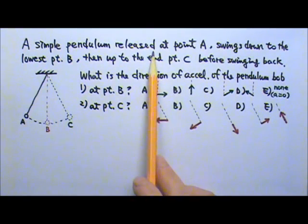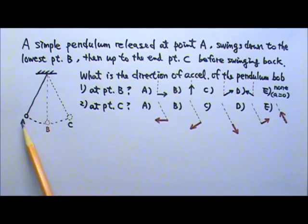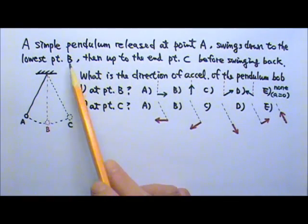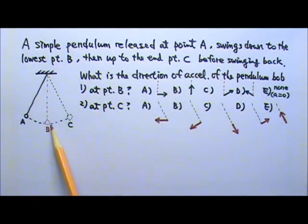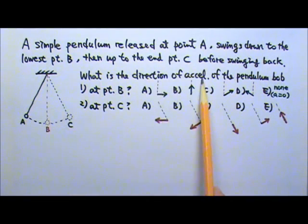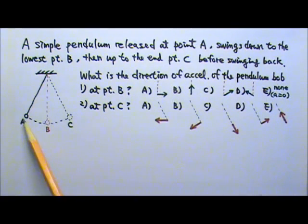A simple pendulum released at point A swings down to the lowest point B and then up to the end point at C before swinging back. What is the direction of acceleration of the pendulum bob when it is at point B and when it is at point C?